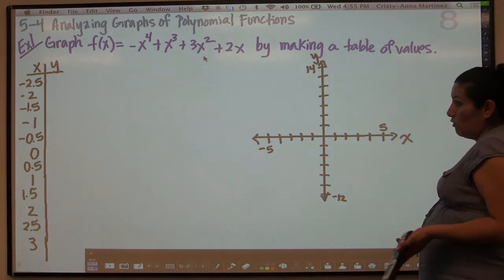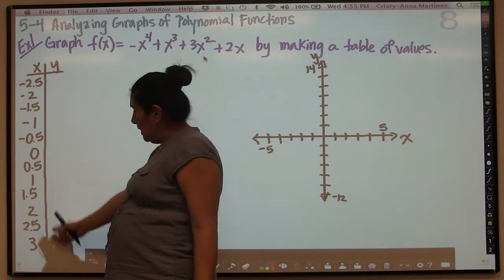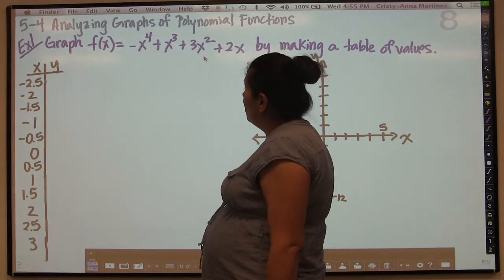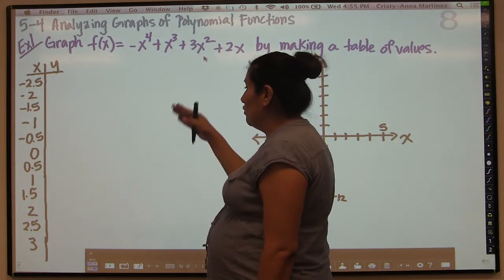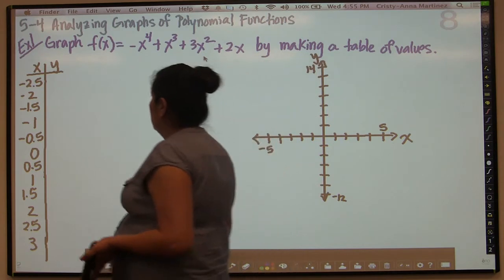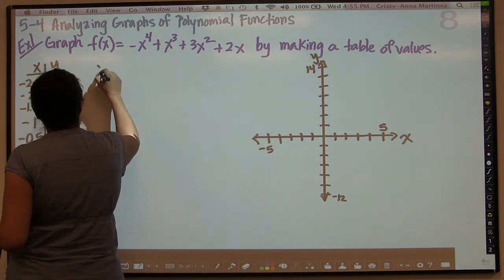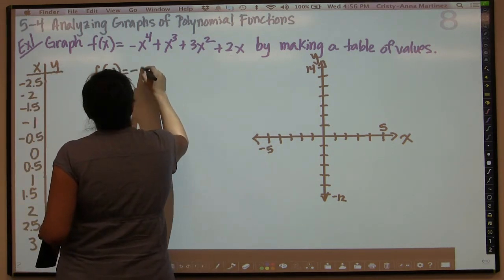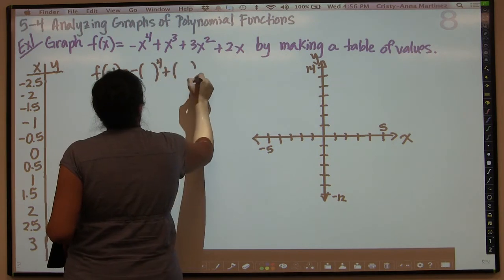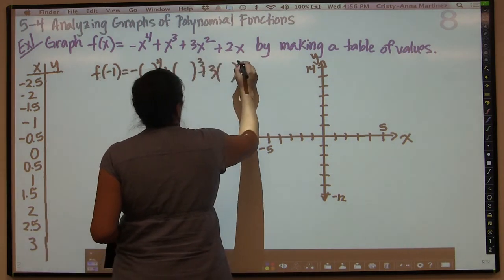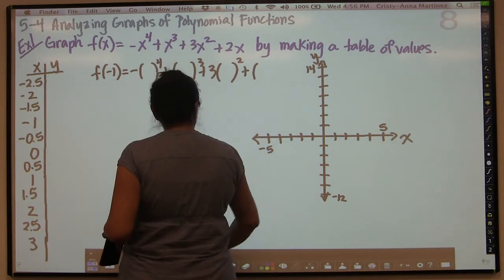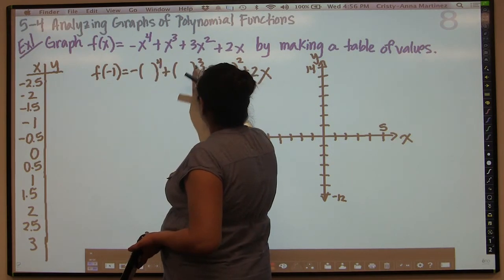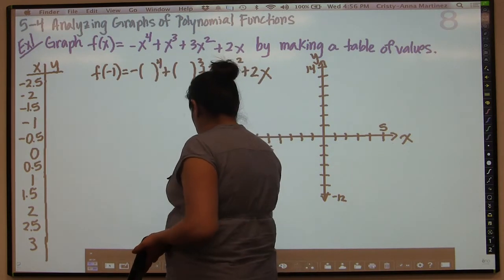I'm sure you already know, but I'm going to do it for one of the values. There are several values that you can plug in, so in the interest of time I'm not going to plug all of them in here in the video. I'll do one so you can see how it works. I'm going to pick negative 1. So if I want to find f of negative 1, I need to replace all of these x's with negative 1. The first thing I do is make sure I write parentheses in all the places where there is an x. So I have negative x to the fourth plus x cubed plus 3x squared plus 2x.